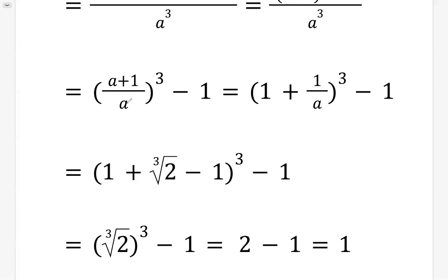So A plus 1 cubed divided by A cubed can be written as A plus 1 divided by A, then cubed. That's 1 plus 1 over A. So simplify to be 1 plus 1 over A cubed, then minus 1.